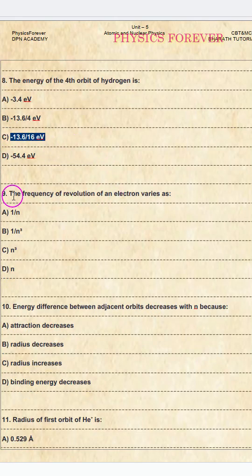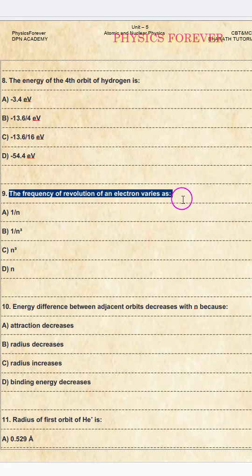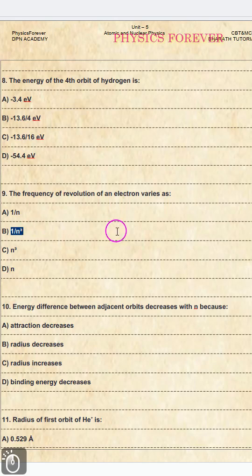Question number nine: the frequency of revolution of an electron varies as? The correct option is B, 1 by n cube.